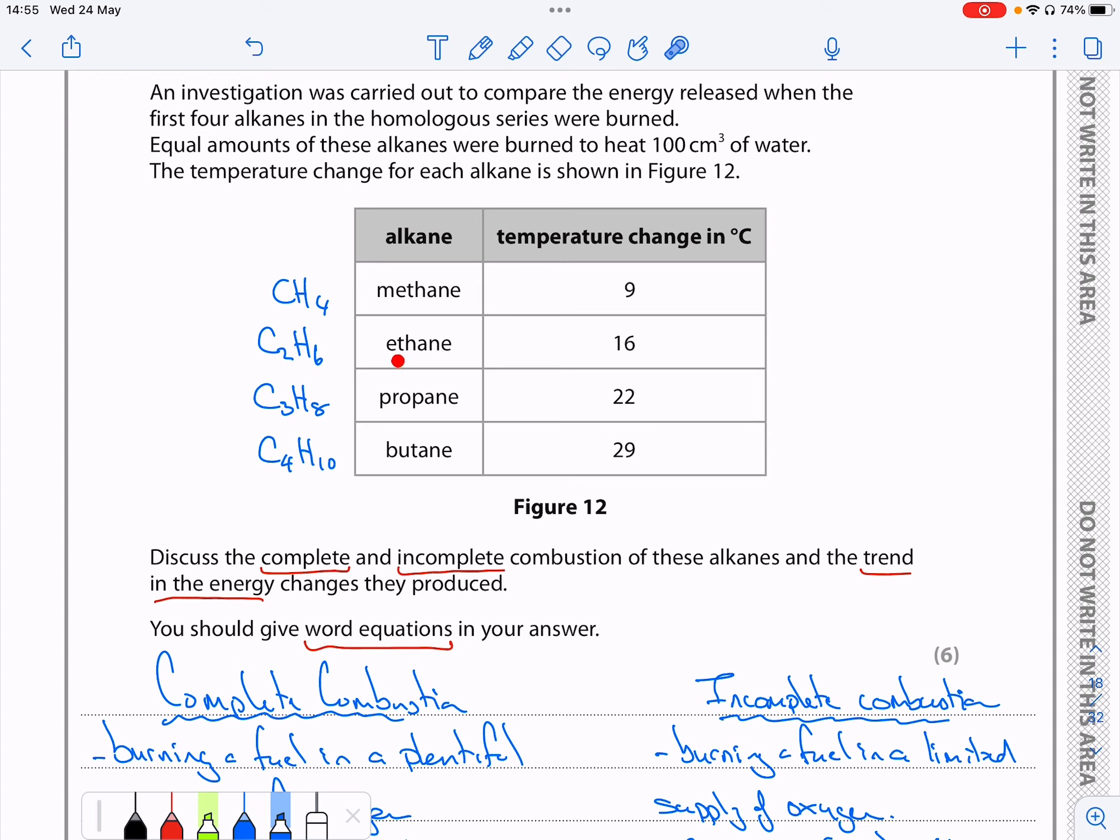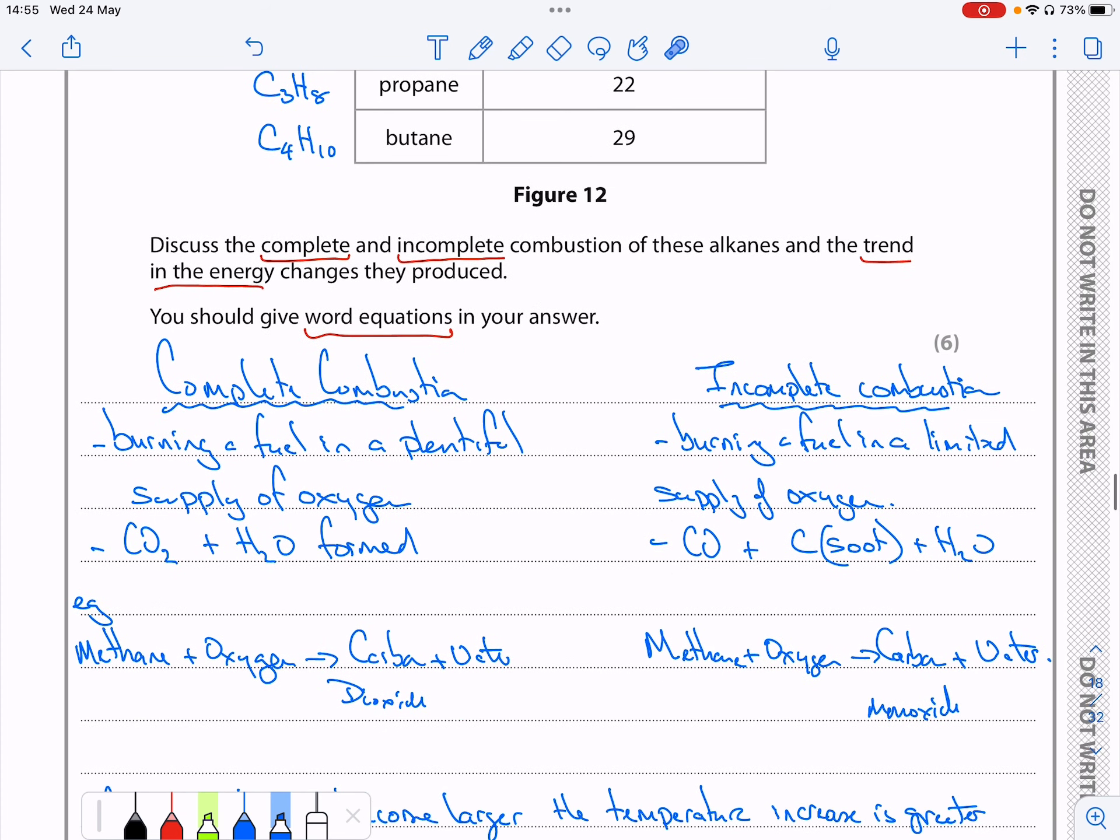So definitions: complete combustion is burning your fuel in a plentiful supply of oxygen and that leads to the formation of carbon dioxide and water.